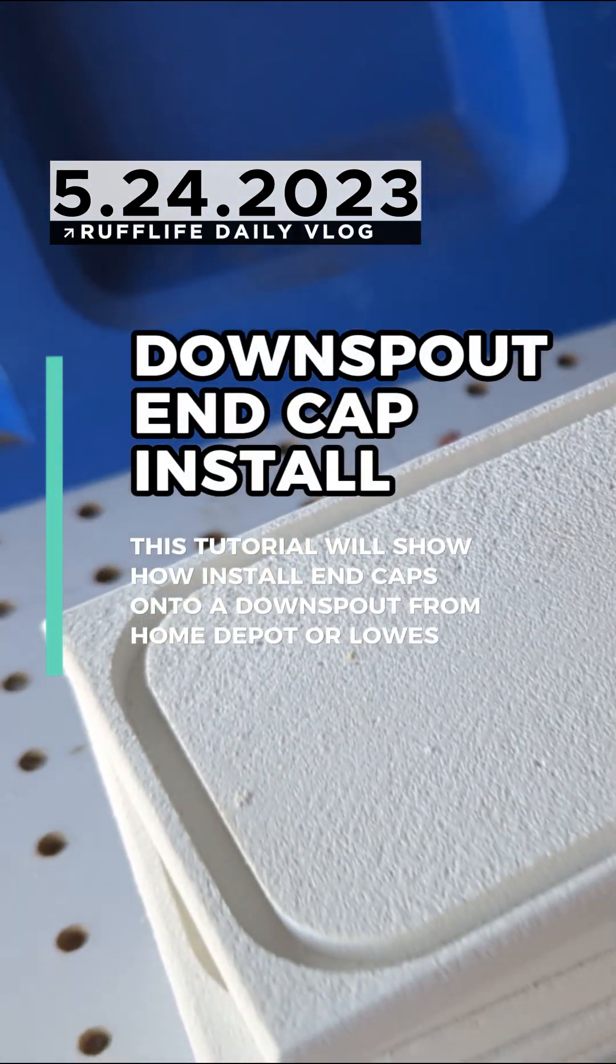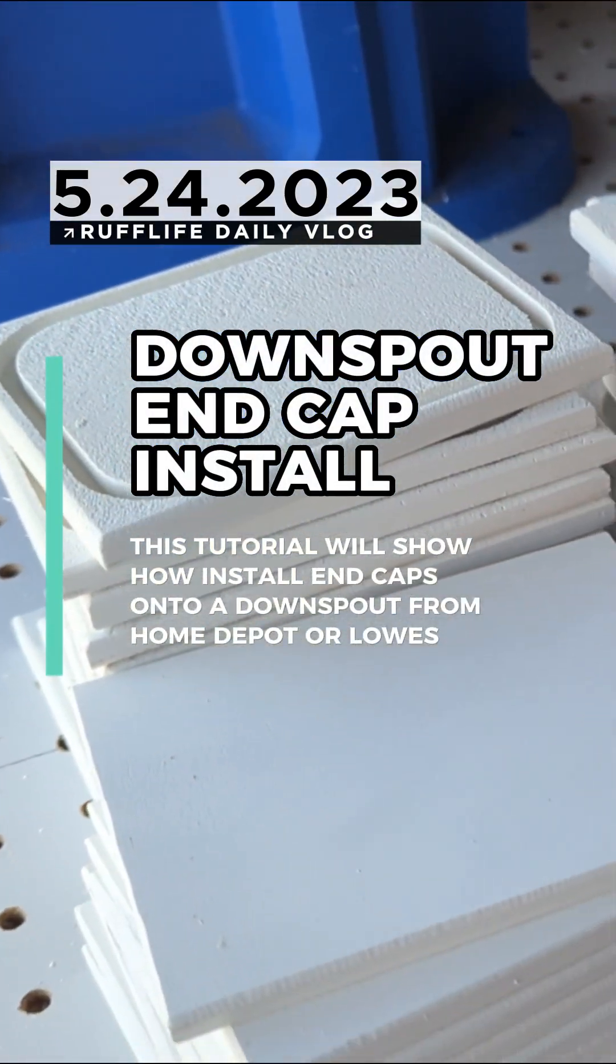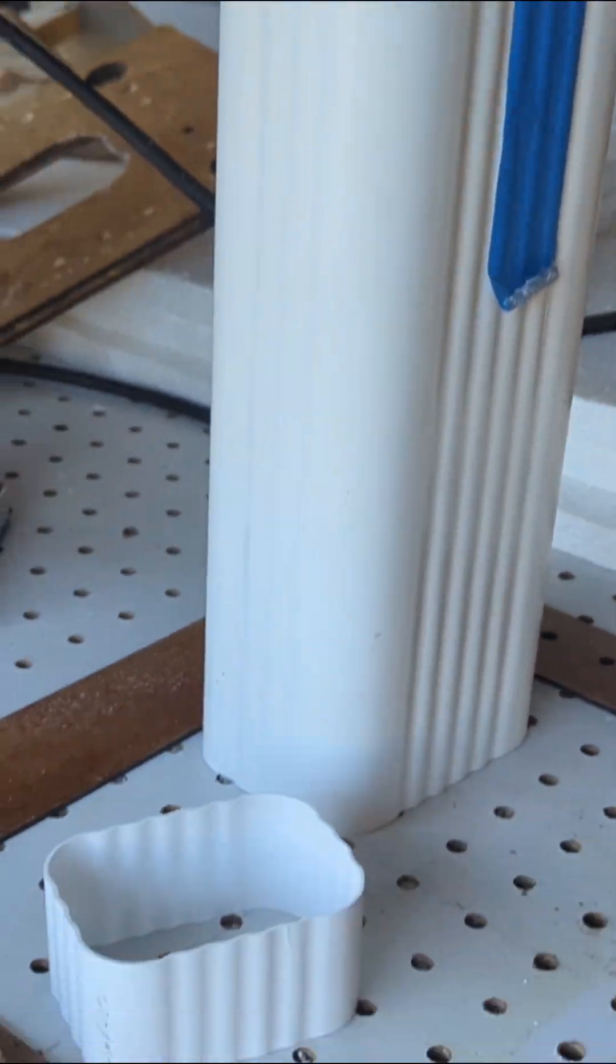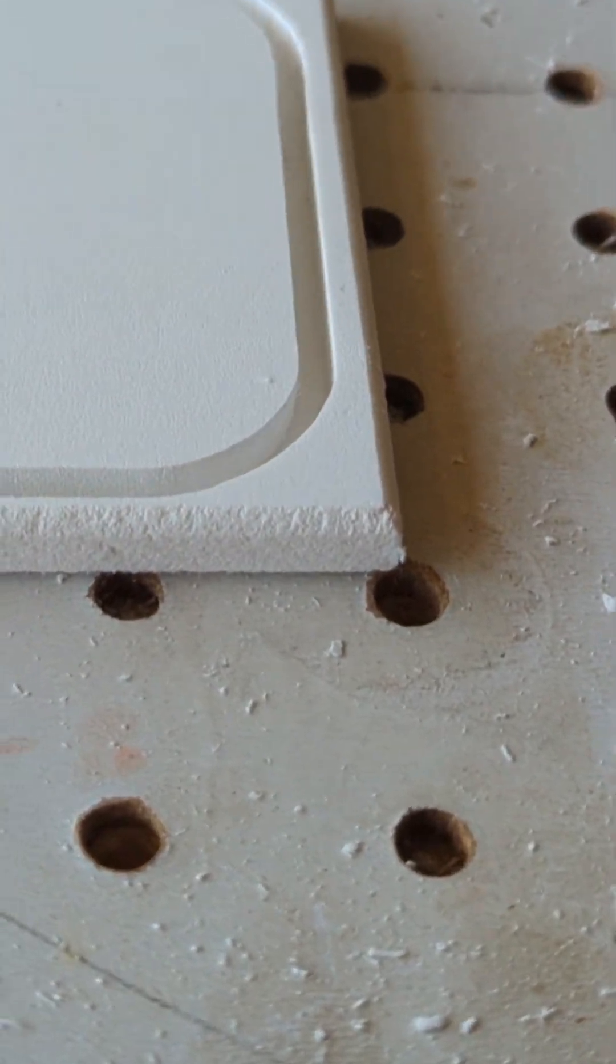You can see in this video lesson how simple it is to build and construct your own hydroponic downspouts for growing plants. I'll be demonstrating how to attach the end caps to the Amerimax downspout gutters, which are available at Lowe's or Home Depot.